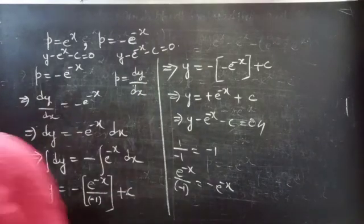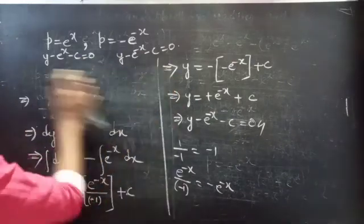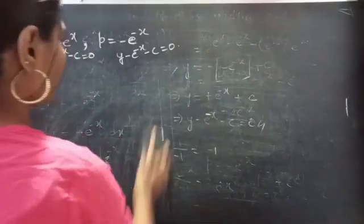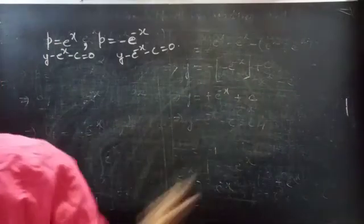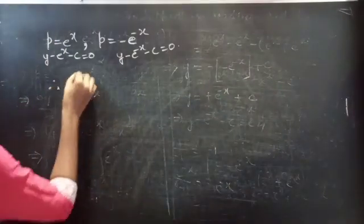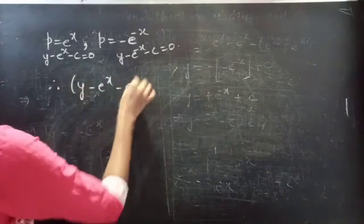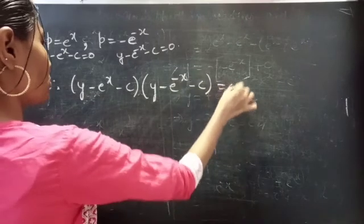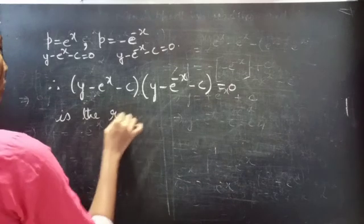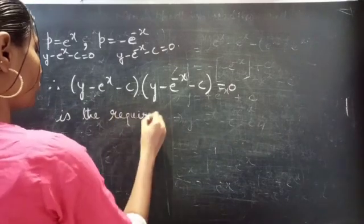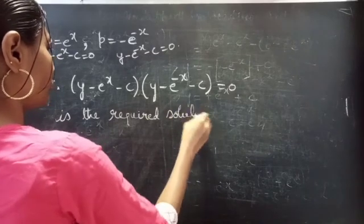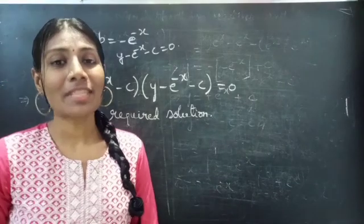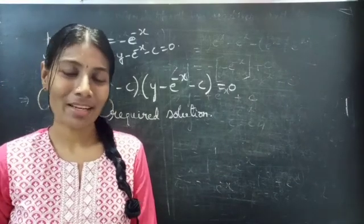The combined form of these two solutions is the required solution to the given differential equation. Therefore: (y minus eˣ minus c) times (y minus e⁻ˣ minus c) equals 0 is the required solution. So we have seen a problem from Solvable for P in this video. Hope you understood. We will see you in the next video.